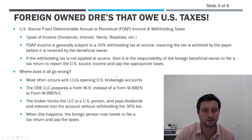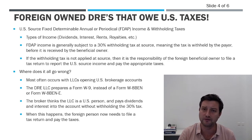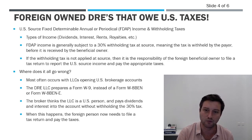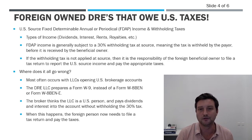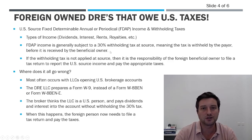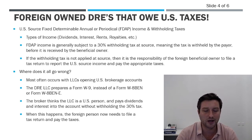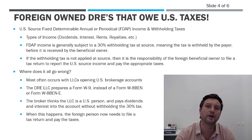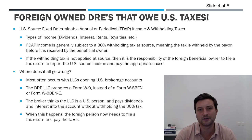Let's move on to the FDAP issue. If you have U.S. source FDAP income passing through and it wasn't subject to withholding tax, you've got another tax problem. What is FDAP income? U.S. source FDAP income is fixed, determinable, annual, or periodical — income from U.S. sources such as interest, dividends, rents, royalties, and other types of fixed payments. When they are paid to a non-U.S. person, they are subject to withholding tax at source.